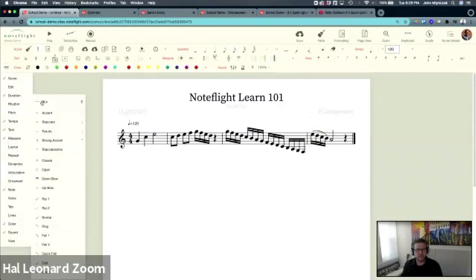So when I was in articulation, it says slur, and it shows the S. Accents, the apostrophes, staccato, semicolon, tenuto's colon. So strong accents, quotes. So it shows the shortcut keys as you go.